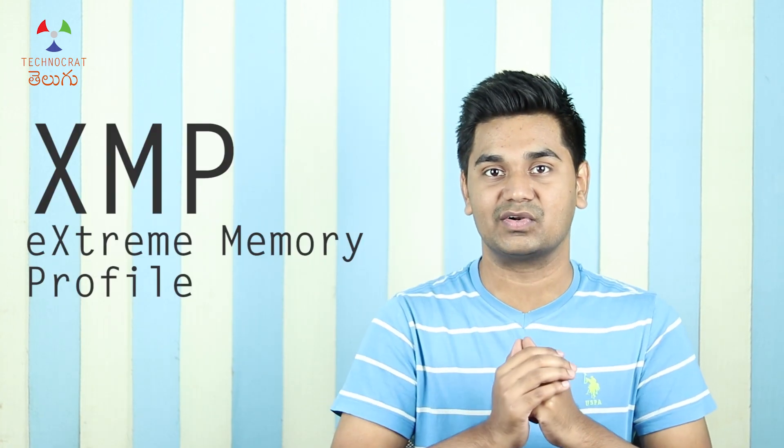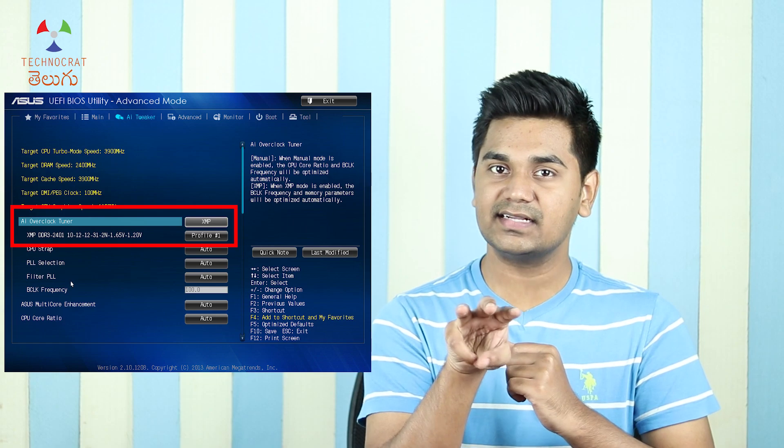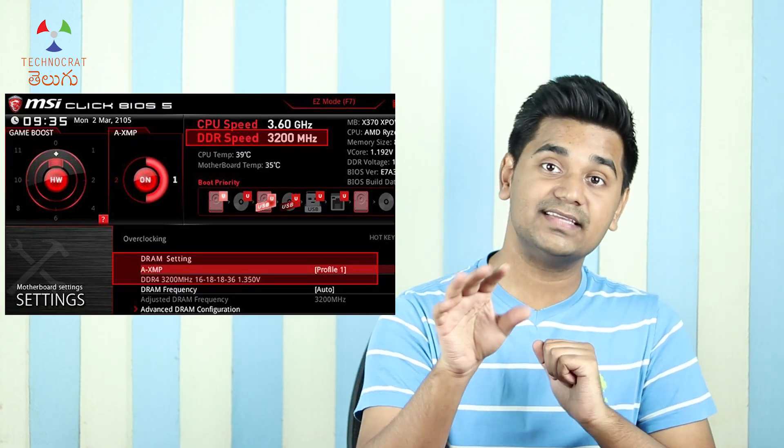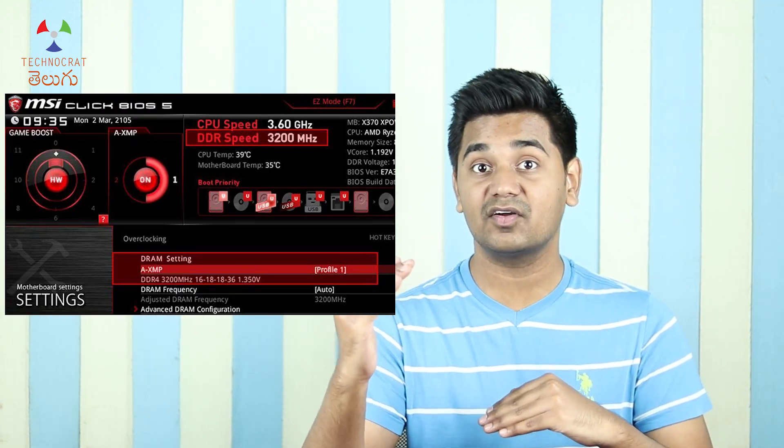The voltage and frequency settings need to be configured correctly — if you don't have proper settings, the computer will crash. But there is an important feature: XMP profiles — Extreme Memory Profiles. There are preset settings for voltage, frequency, RAM timings, and a particular profile. If you choose that XMP profile, the three settings will automatically be set up for high performance. About 90% of laptop users only need to consider RAM capacity. But gamers and graphic designers running heavy applications should pay attention to voltage, clock speed, bandwidth, and RAM timings for the best performance.